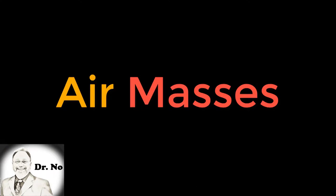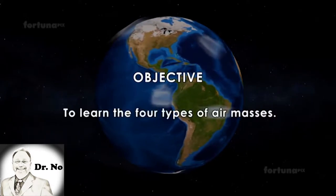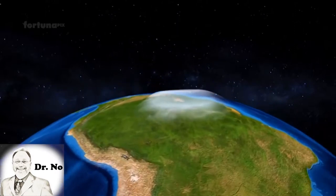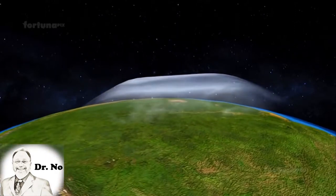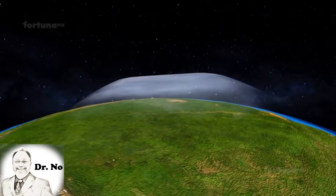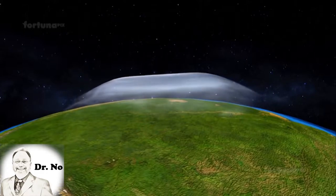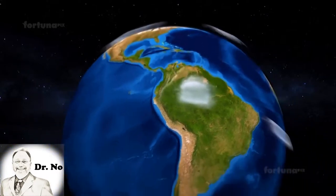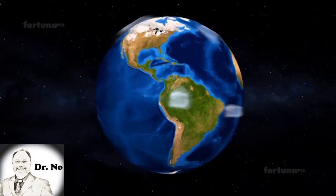We're going to start with air masses. Other than clouds floating by, we don't often think about air moving overhead. But on a daily basis, huge bodies of air called air masses pass us by in the atmosphere above. An air mass is not only large — it can be thousands of miles across and thick — it also has uniform temperature, hot or cold, and moisture, humid or dry.